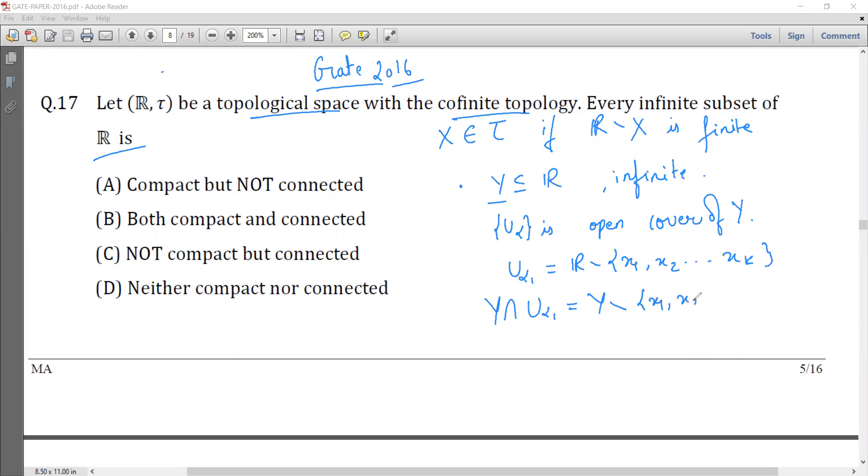So the first open set covers almost all of Y except for finite elements, and for each xi which are not covered by U alpha 1, we can find one open set in the cover.